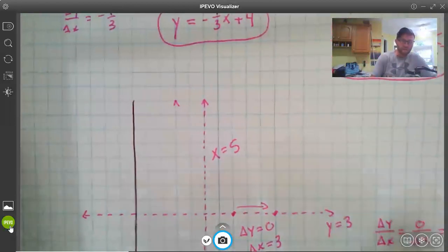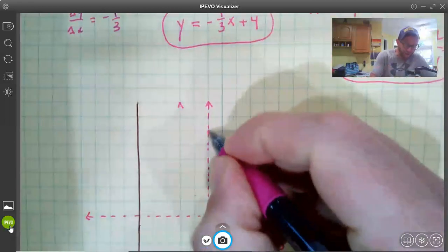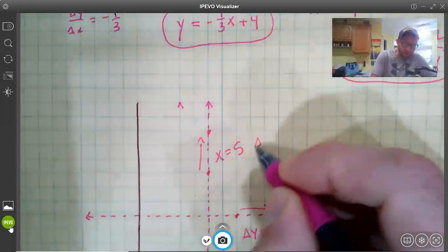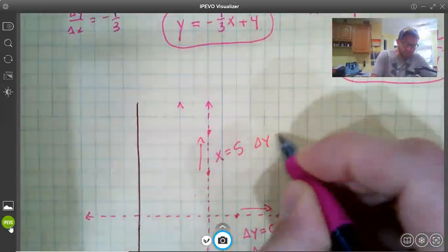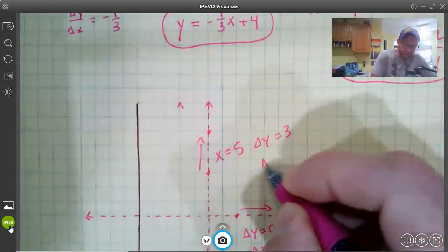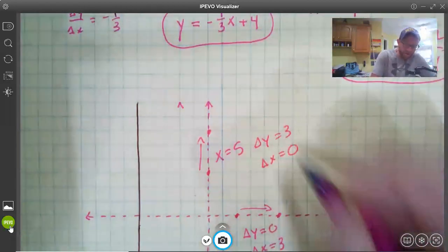On the other hand, for the line here, if I pick two points, say I'm going up, my change in y is 1, 2, 3, right? In this particular case, and my change in x, well that's 0.